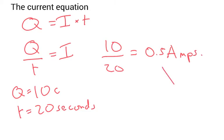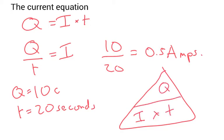And then the triangle: current times time, and then Q here. So if you want to find out current, charge divided by time. Maybe the time something took—charge divided by current. Or if you want to know how much charge was transferred, current times time.